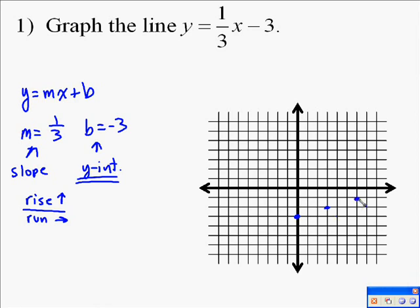And then we're going to do that again, up 1 to the right 3. You can go the other direction and just do the opposite, down 1 to the left 3, and down 1 to the left 3 if you wanted to keep going. And we draw in our line, and that gives us the graph of y equals 1 third x minus 3. That's what that line represents, that equation.